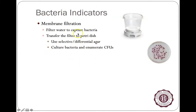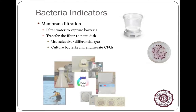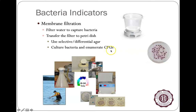Generally, as E. coli levels go up, the risk for gastrointestinal illness goes up, so it's important to know. There are other methods using membrane filtration: water is filtered across a membrane, bacteria are caught on the surface, and the filter is placed on a petri dish and incubated at 44.5 degrees Celsius — about 120 degrees Fahrenheit — where E. coli grow. One limitation of many of these methods is that from the time you take your sample, filter it, and put it in the incubator, it takes about 18 to 24 hours before you can count the bacteria.